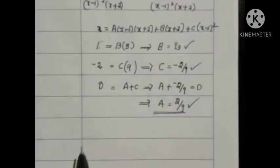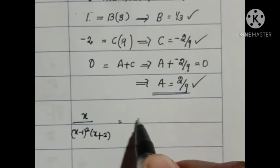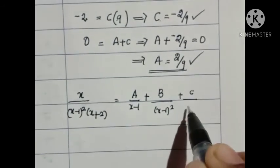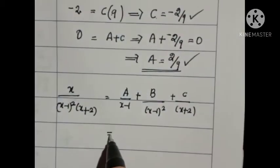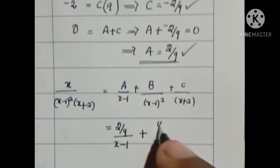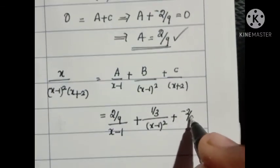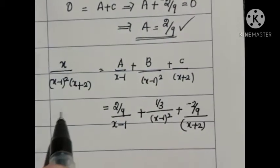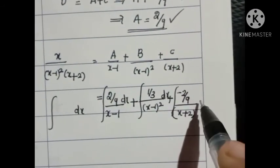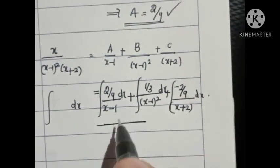The expression x/[(x − 1)²(x + 2)] becomes (2/9)/(x − 1) + (1/3)/(x − 1)² + (−2/9)/(x + 2). Now take the integration with respect to dx. As usual, find the integral — I am not completing it here, so complete it yourself. This is the process.